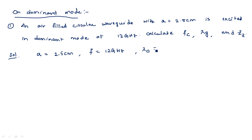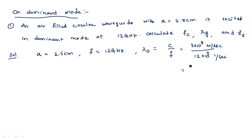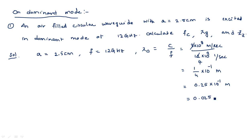Wherever we need lambda-not, we calculate it using lambda-not equals c divided by f: 3×10⁸ meters per second divided by 12×10⁹ Hz. Simplifying, we get 0.025 meters. This is lambda-not with respect to operating frequency.